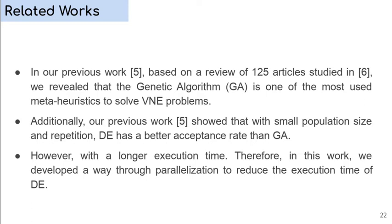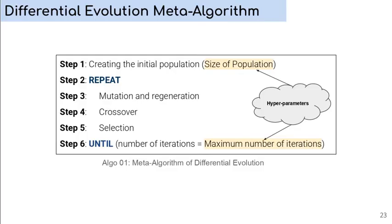In this slide, we have the differential evolution meta-algorithm. This is a sequential logic. In step 1, there is the process of creating the initial population. The size of the population is a hyperparameter. The block into steps 2 and 6 is a repetition in which the number maximum of iteration is another hyperparameter. Step 2 is mutation and regeneration. Step 4, crossover. And step 5, selection.